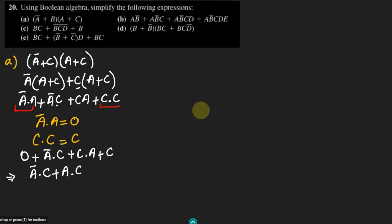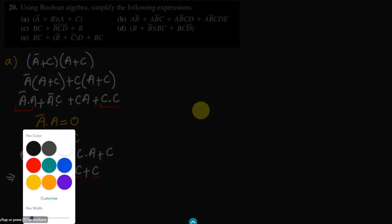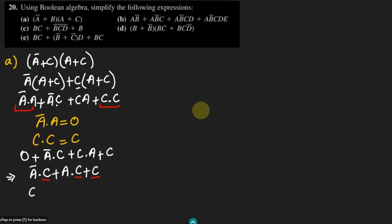So ultimately we will have a' dot C, a dot C, and C. We can see that C is common in all these literals. Taking C common, what we get is C times (a' + a + 1).